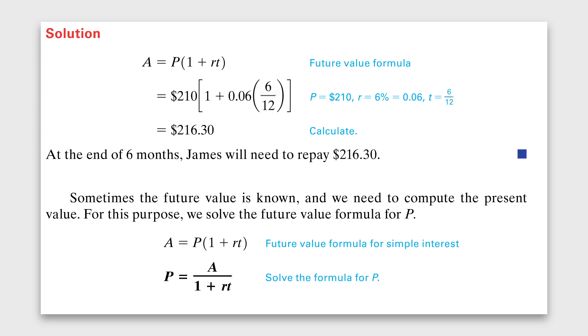To work out the future simple interest we'll use the formula A equals P times 1 plus N. And this will give you the future simple interest.